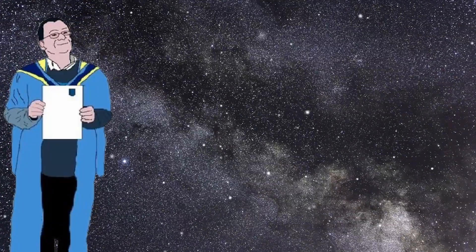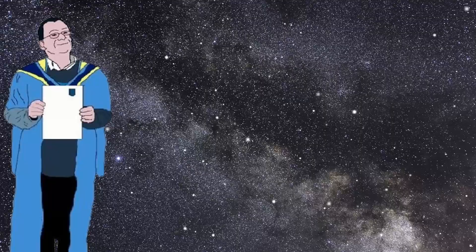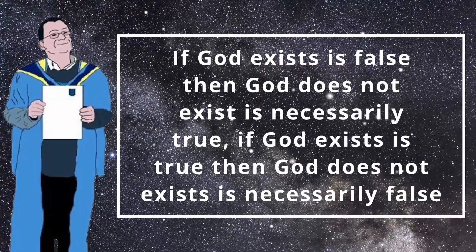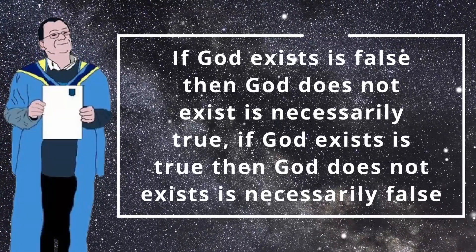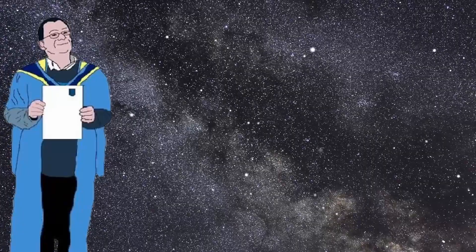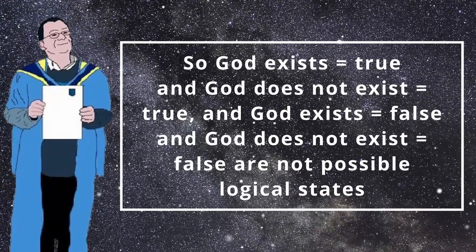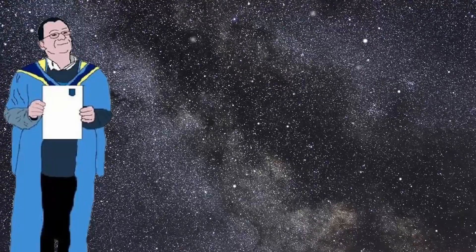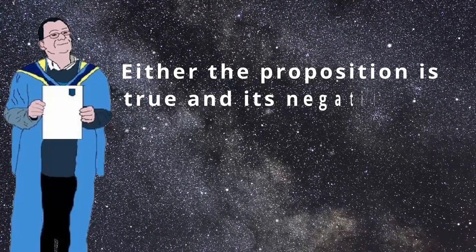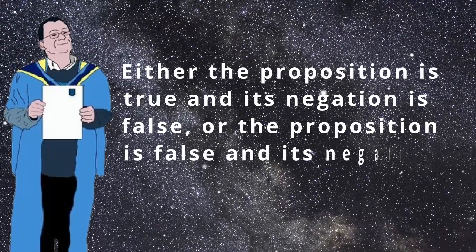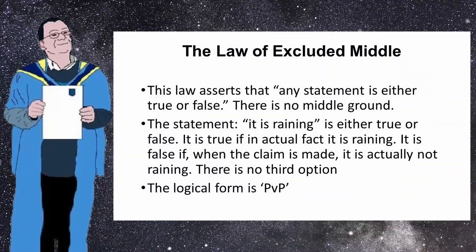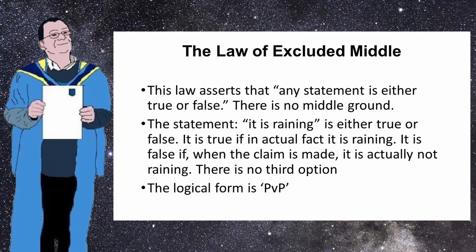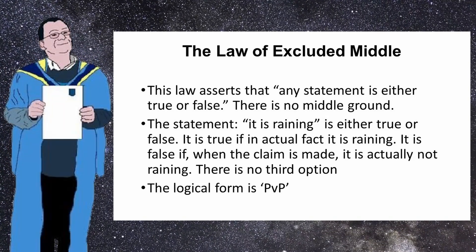Neither can both contradictory propositions be false at the same time. One being false means the other must be true. To argue that they were both false would also be a contradiction, violating the law of non-contradiction. This means that for any proposition, it can only be the case that either the proposition is true and its negation is false, or the proposition is false and its negation is true — and there is no other option. This is what the Law of Excluded Middle refers to.